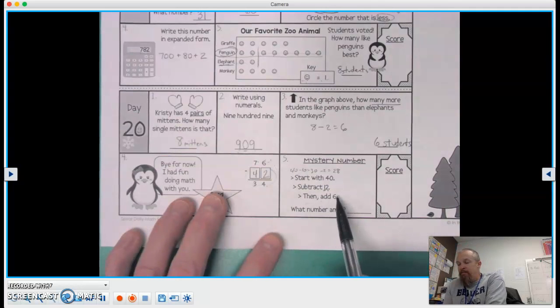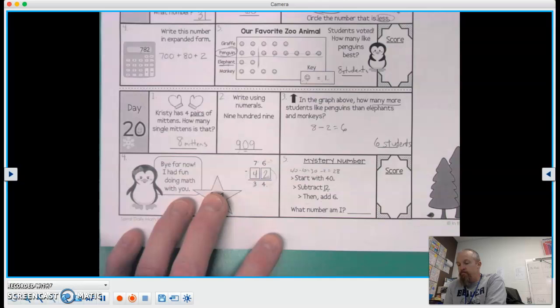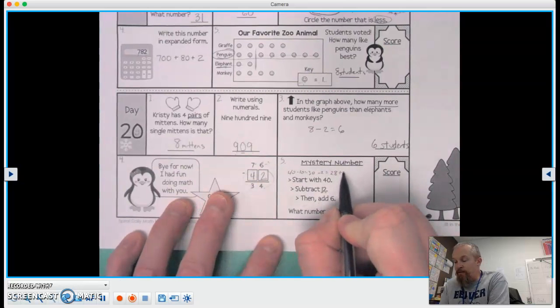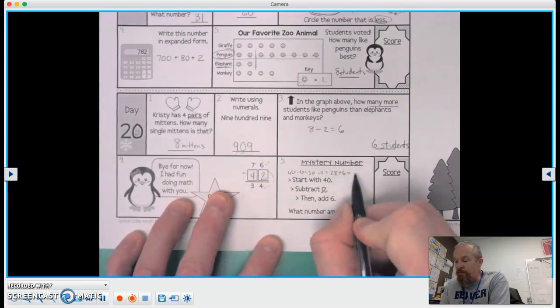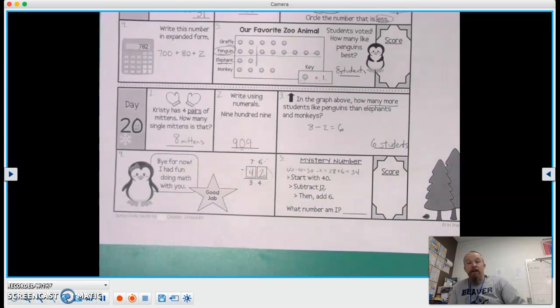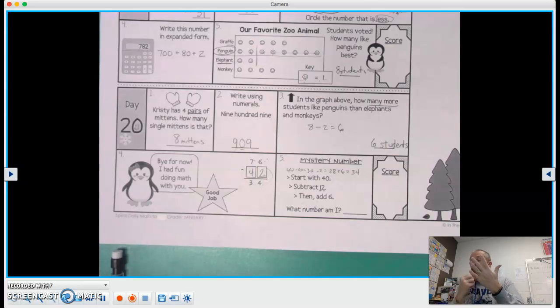Then add six. All right, well, 28 plus six equals 34. 28, 29, 30, 31, 32, 33, 34.